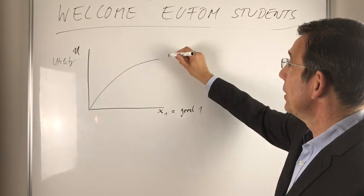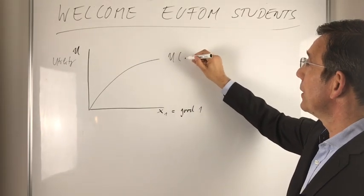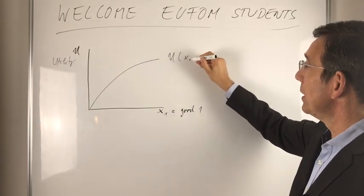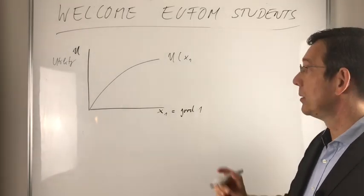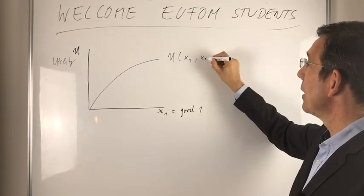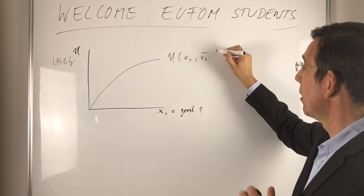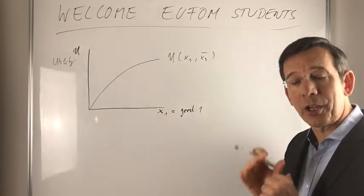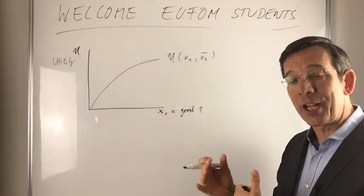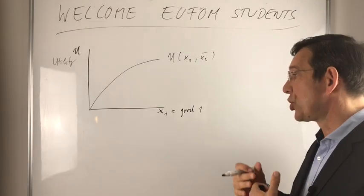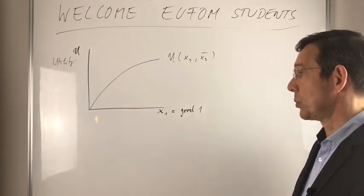And the utility function is a function of the quantity of good one, and all other goods summarized in x2 are a constant. We just focus on x1 and the change of x1, the quantity change of x1.